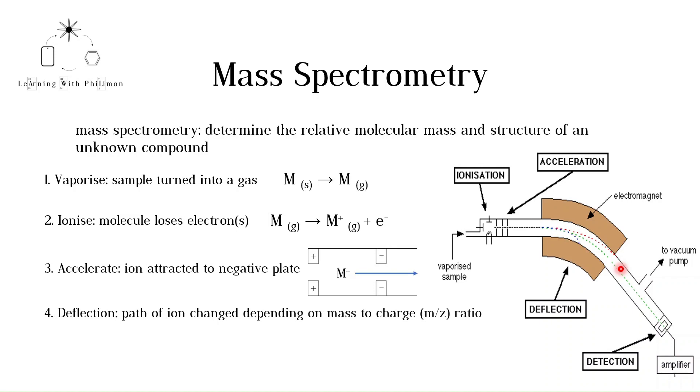How much the charged molecule is deflected depends on its mass and charge. This is commonly referred to as the mass-to-charge ratio, m divided by z. The larger the mass of the molecule, the less it is deflected.